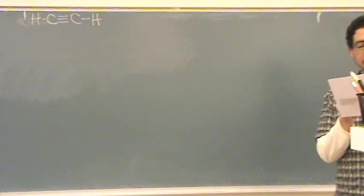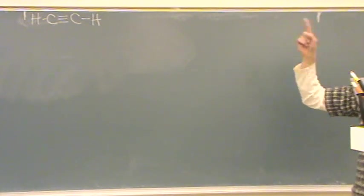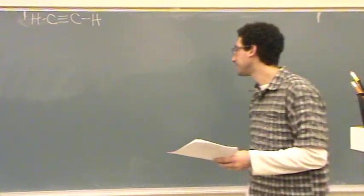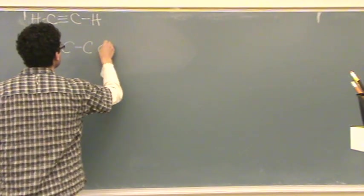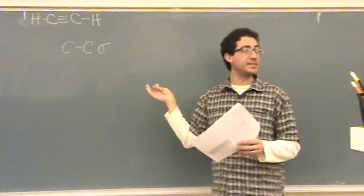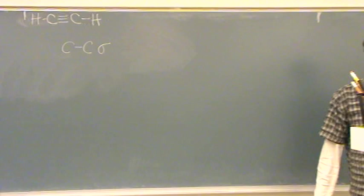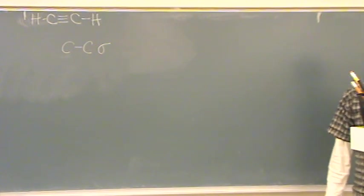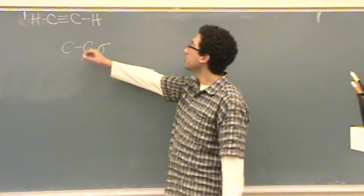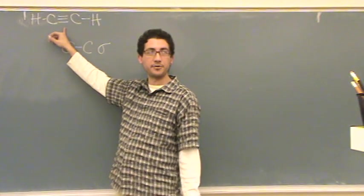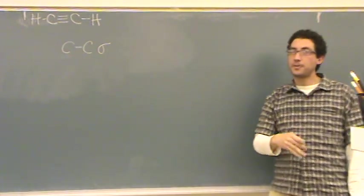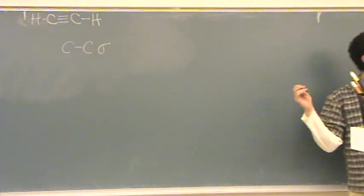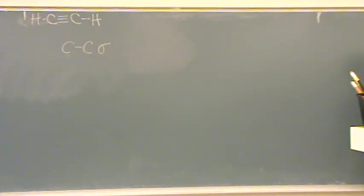What hybrid orbitals in this molecule overlap to make the carbon-carbon sigma bond? First of all, does this have a carbon-carbon sigma bond? Where is it? Right here. This triple bond is made out of one sigma and two pi bonds. So there is a sigma. Every bond does have a sigma bond.